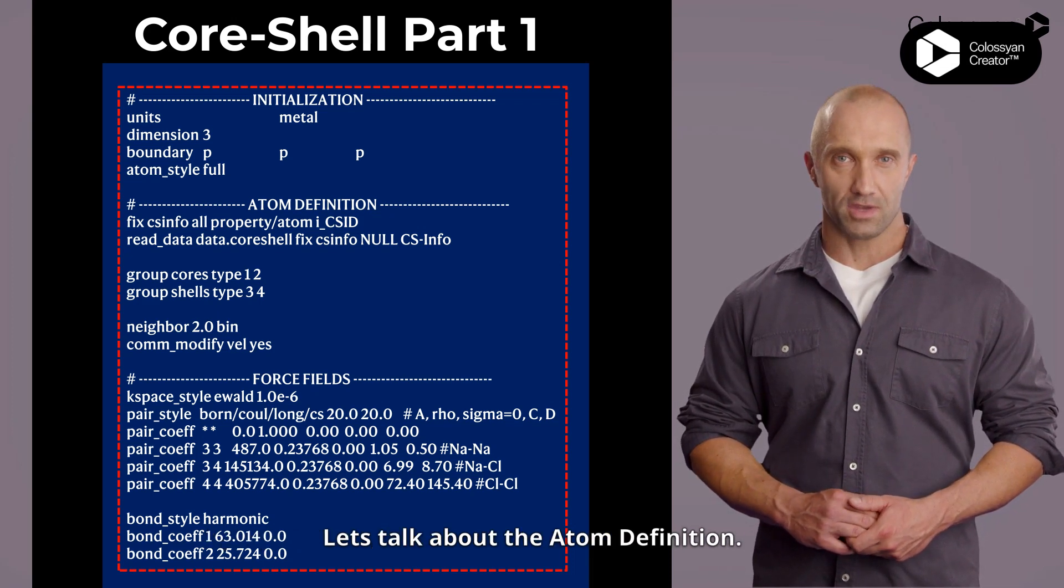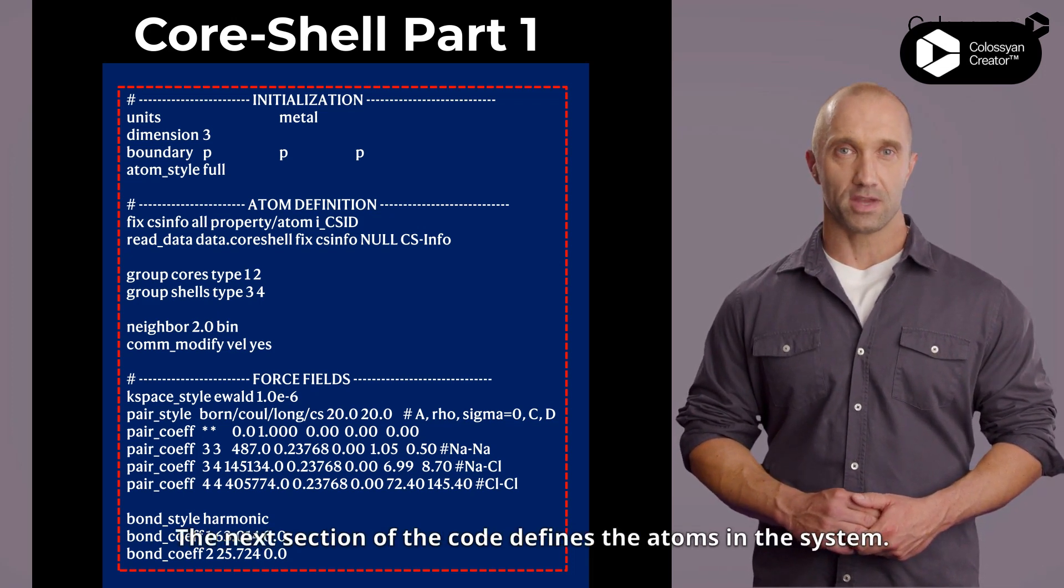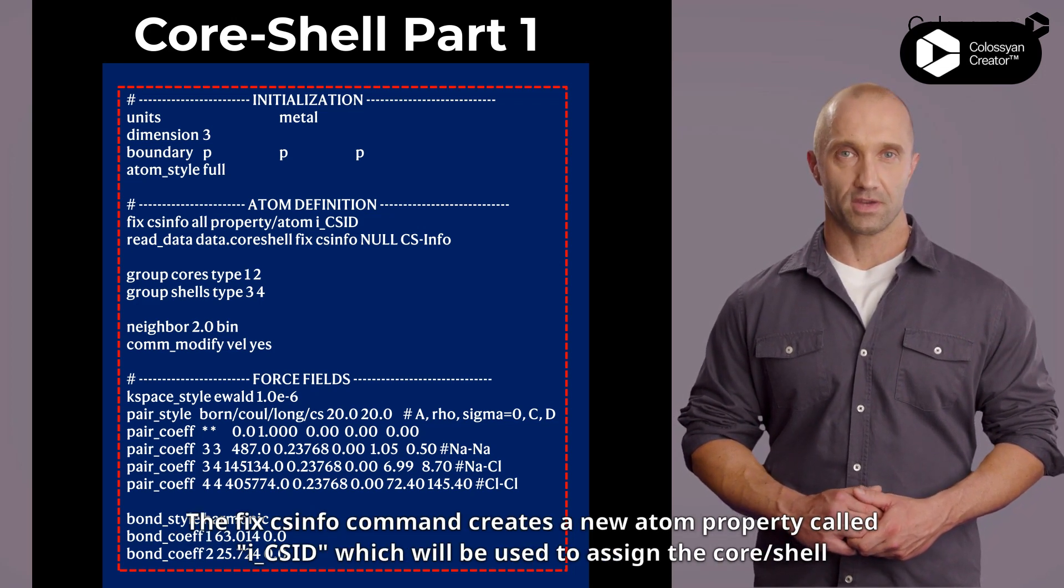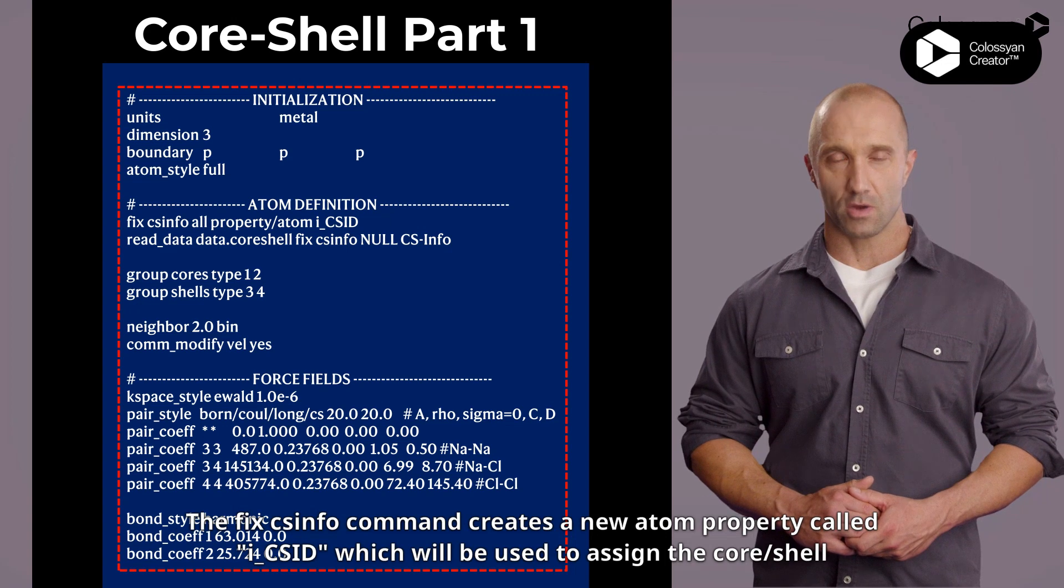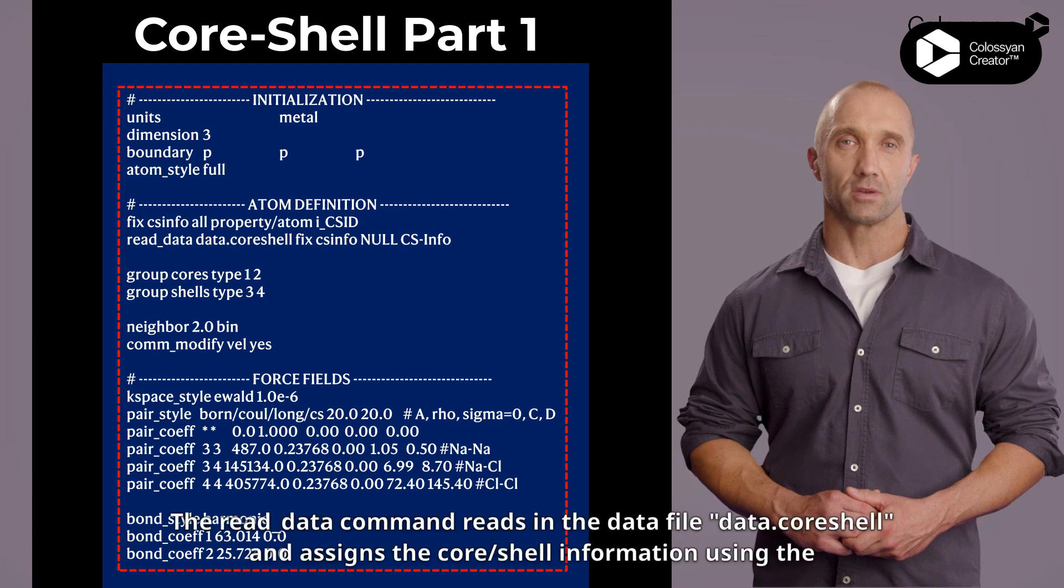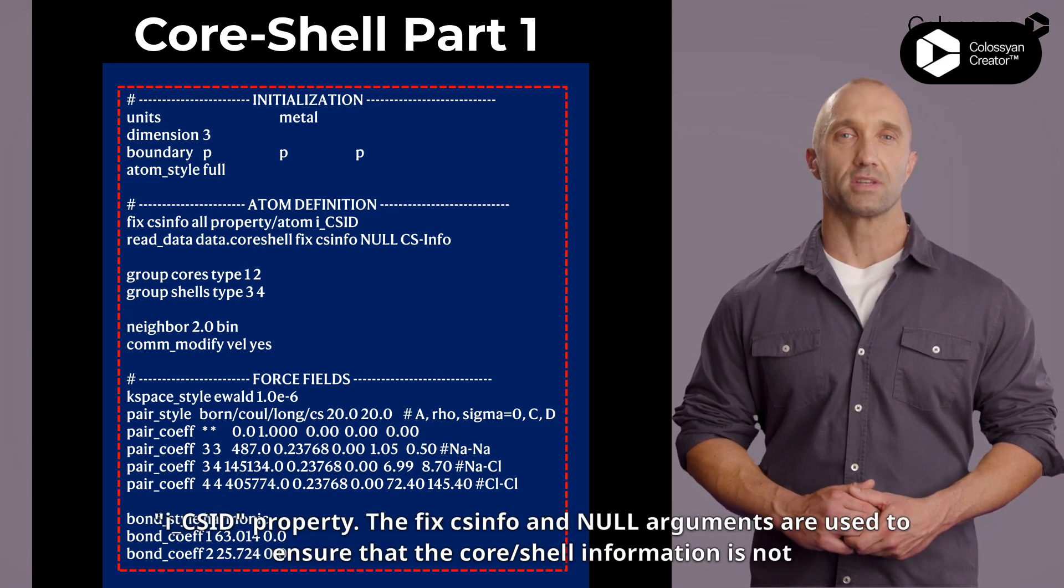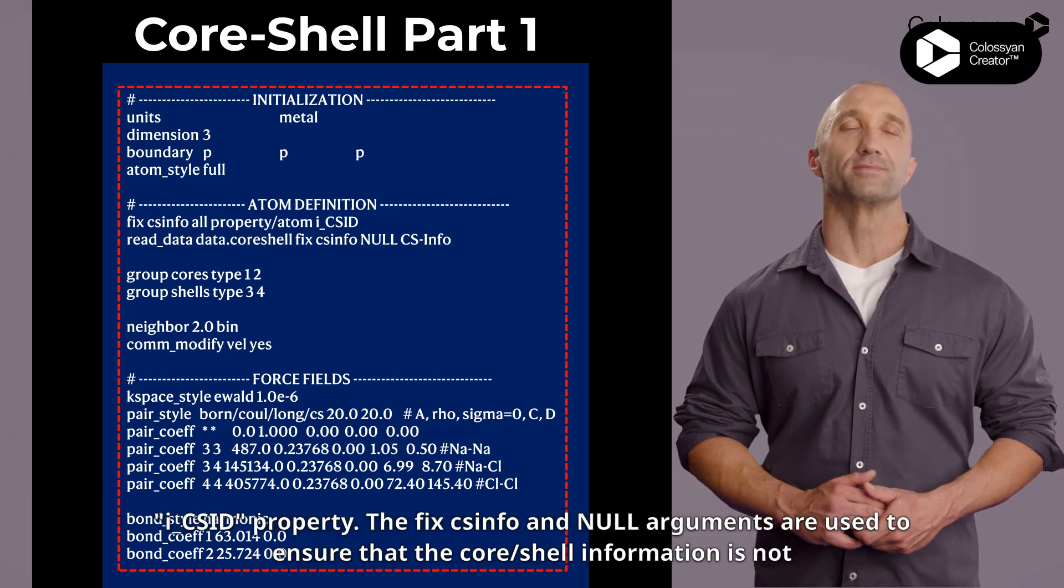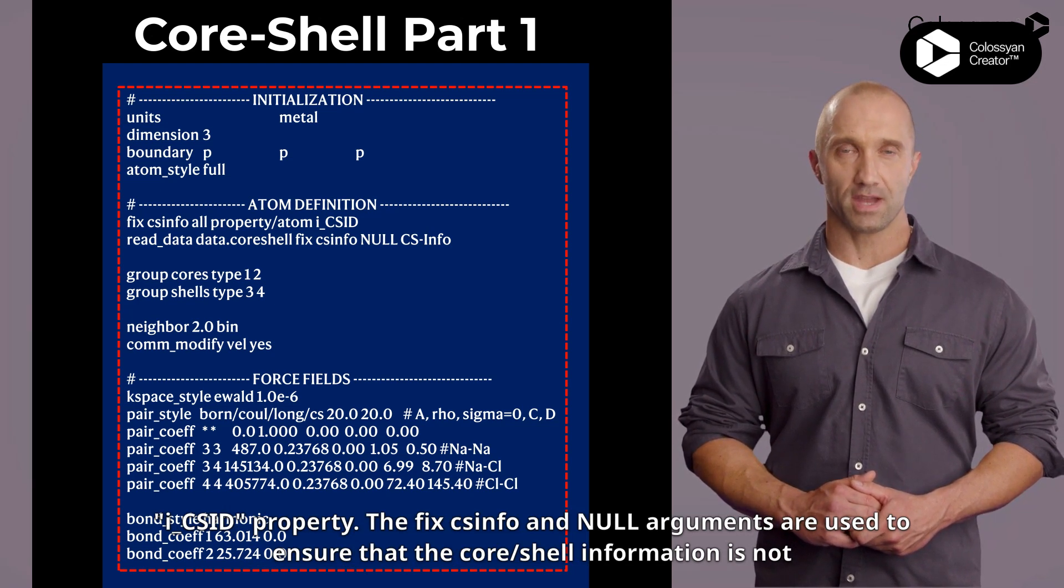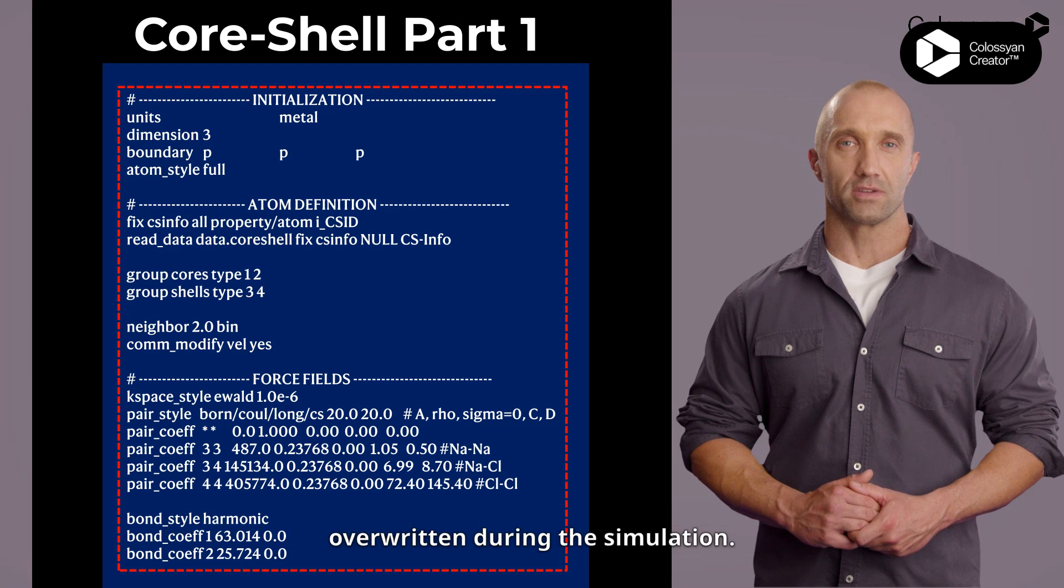Let's talk about the atom definition. The next section of the code defines the atoms in the system. The fix csinfo command creates a new atom property called i_csid, which will be used to assign the core/shell information for each atom. The read_data command reads in the data file data.coreshell and assigns the core/shell information using that i_csid property.